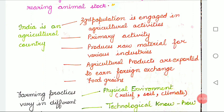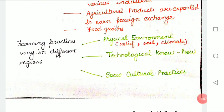Technical know-how also influences agriculture. Better technology has allowed farmers to feed more people. Scientific and technological developments like use of better seeds, irrigation facilities, fertilizers and farm machineries greatly influence agriculture. Sociocultural practices also influence agriculture. Physical environment and technological know-how are very important, so please learn them.